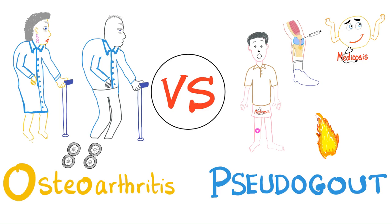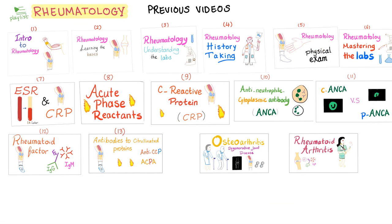Before we get started, please remember that gout affected the big toe, but now it's pseudogout. So it's not the big toe — it's the knee, the wrist, the shoulder, the ankle, the elbow, and the second and third MCP, metacarpophalangeal joints. There are over 60 videos in my rheumatology playlist. Please watch them in order.